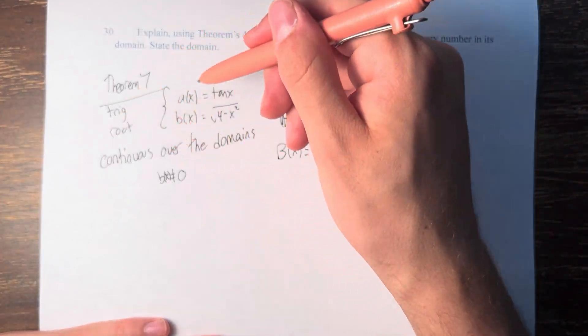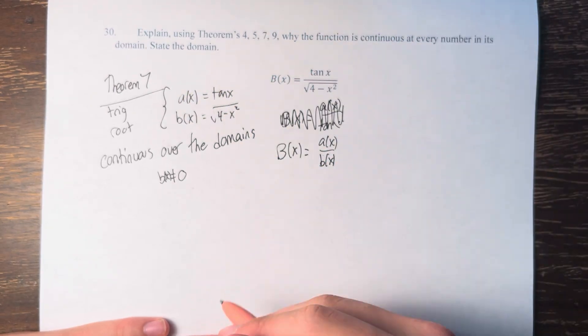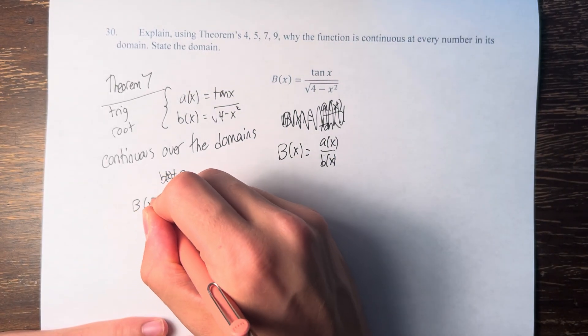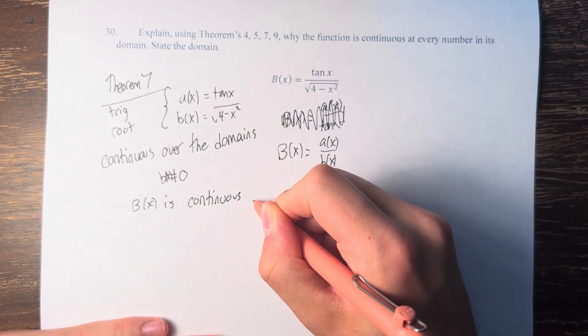So we can therefore say, because we know this fact about the individual parts, the numerator and the denominator, we can say that B(x) is continuous at every number in its domain.